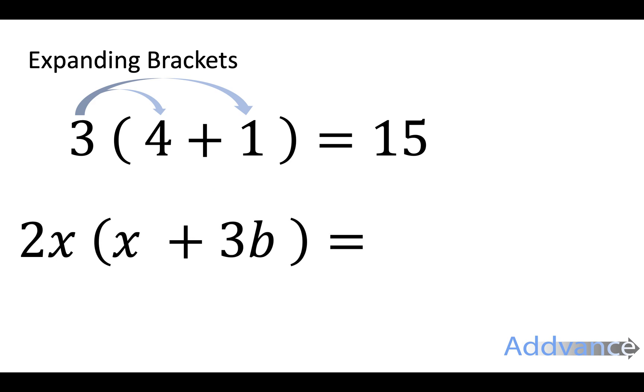For an algebraic example where I'm using algebra and letters to make it a little bit more complicated, I just multiply everything inside the bracket by everything outside the bracket. 2x times x is 2x squared. 2x times 3b is 6bx. And that's the final answer.